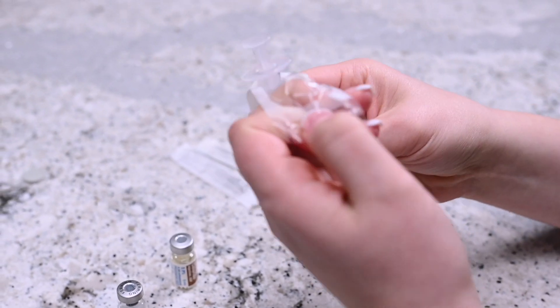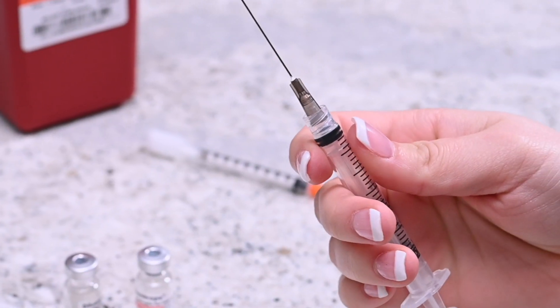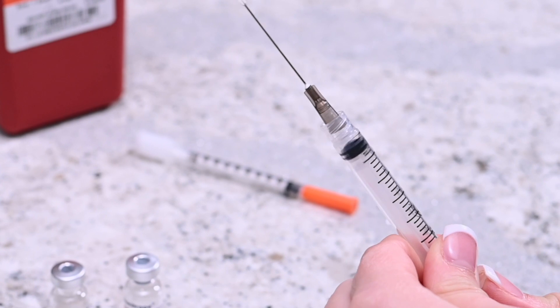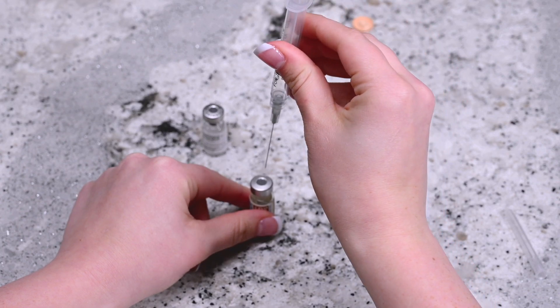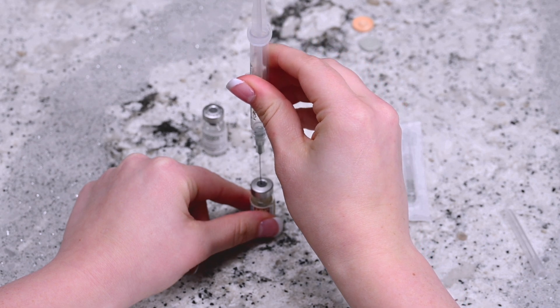Remove the mixing needle and syringe from the packaging and remove the cap of the needle. Hold the needle upright and draw back the plunger to fill the syringe with air. Hold the base of the vial of sterile diluent and pierce the top of the rubber stopper with the needle.